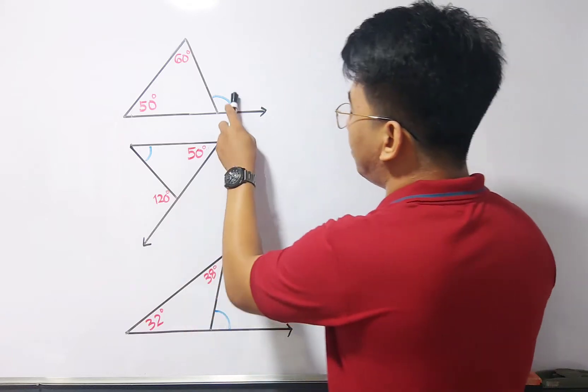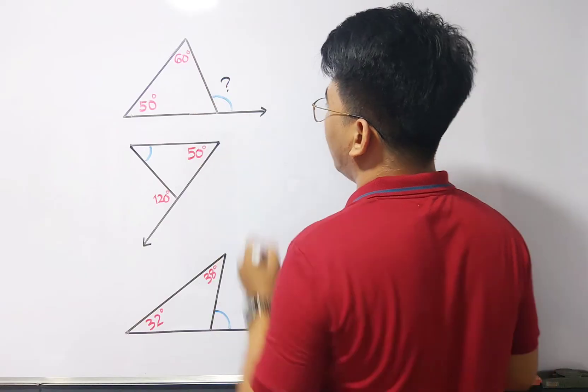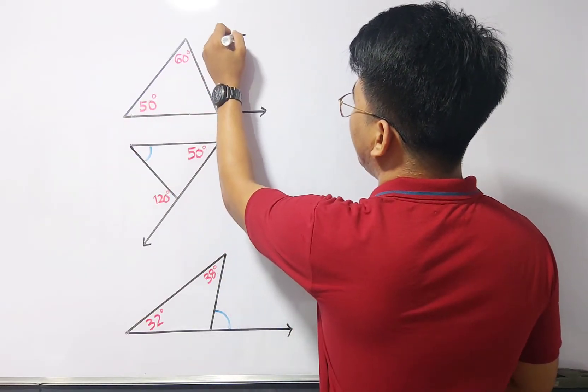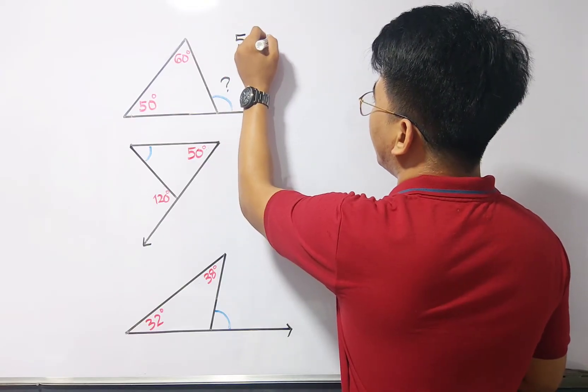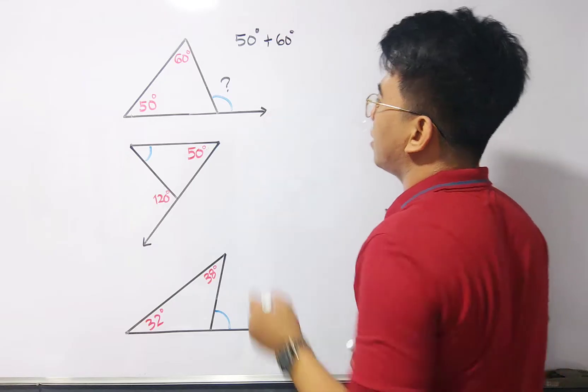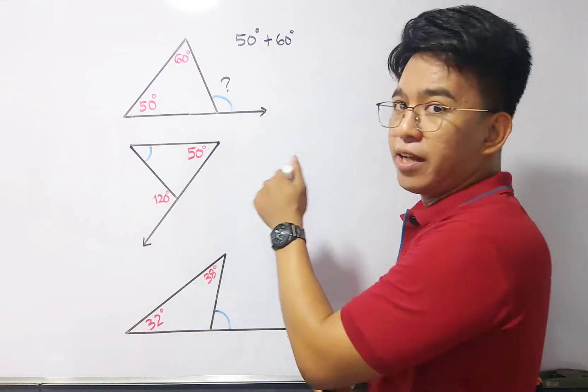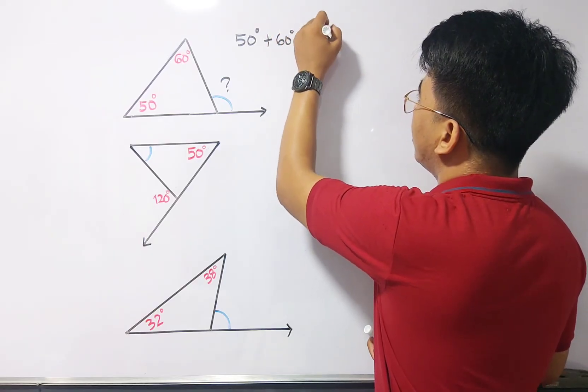So, to solve this problem, or to find what is the measurement of this angle, simply add these two measurements. We have 50 degrees plus 60 degrees, and as you can see, when we add 50 degrees plus 60 degrees, that is equivalent to 110 degrees.